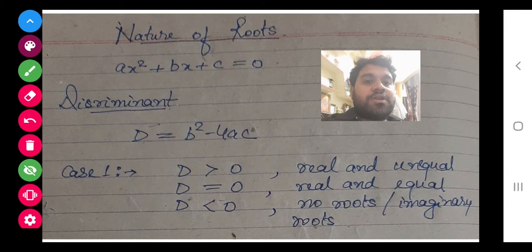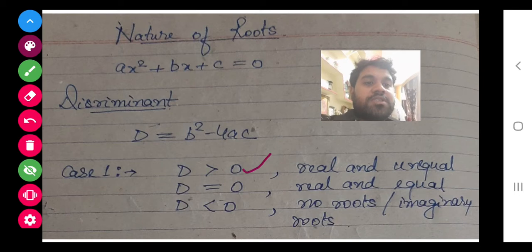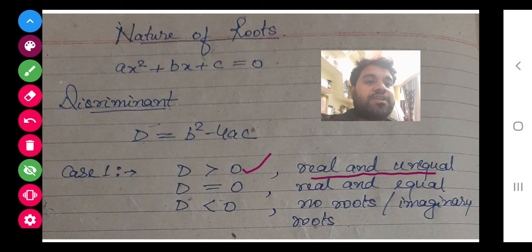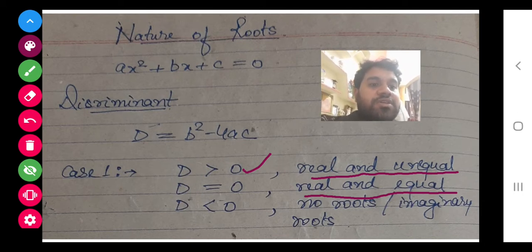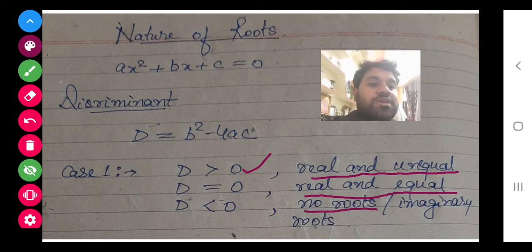There are three cases. Case number one: D is greater than zero. Case two: D is equal to zero. Case three: D is smaller than zero. If the discriminant is greater than zero, then real and unequal roots will come. If D is exactly equal to zero, then real and equal roots come — you can also say rational roots.